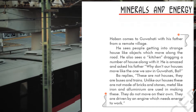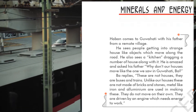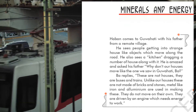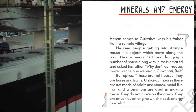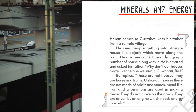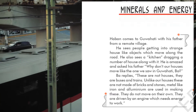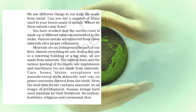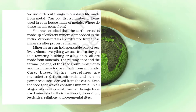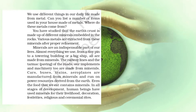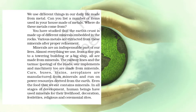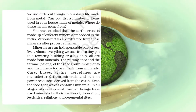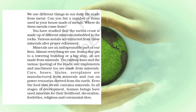Unlike our houses, these are not made of bricks and stones. Metals like iron and aluminium are used in making these. They do not move on their own — they are driven by an engine which needs energy to work. We use different things in our daily life made from metal. Can you list a number of items used in your house made of metals? Where do these metals come from?